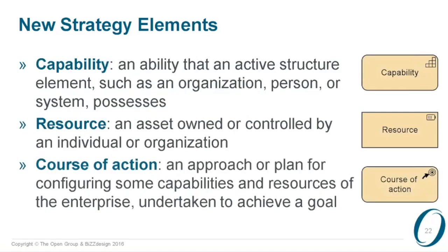Here are the most important additions in these strategy elements. First, we have the capability concept, and that's probably the most requested improvement to ArchiMate over the last years. Most people are now working with capability maps and capability planning, so we have added a capability concept defined in a way that is compatible with, for example, the TOGAF Business Capability Guide recently published, or the BIZBOK from the Business Architecture Guild. It's about the ability that some structure elements — like an organization, a person, or a system — possesses. It is what you can do, which is distinct from a business function. A business function is much more about what you do and which parts of the organization are assigned to do that. Capabilities are what you can do given the resources you possess, the processes you have in place, et cetera.